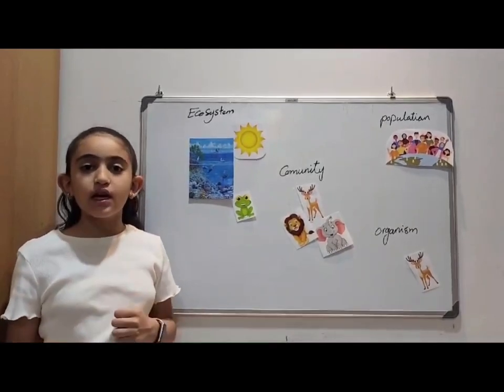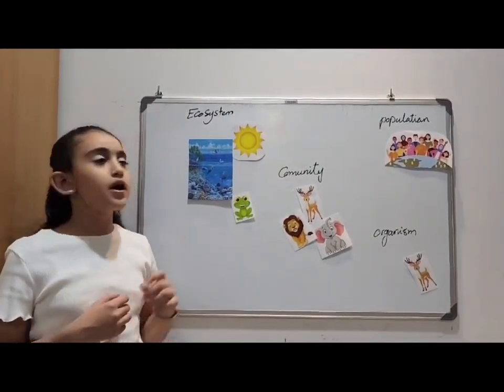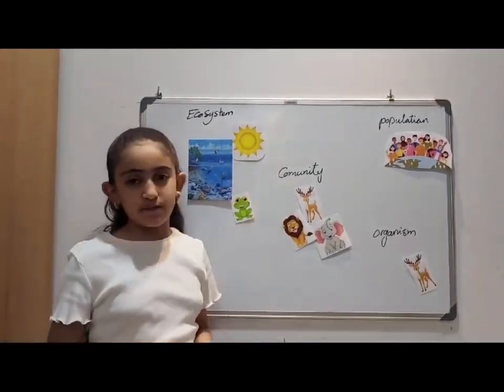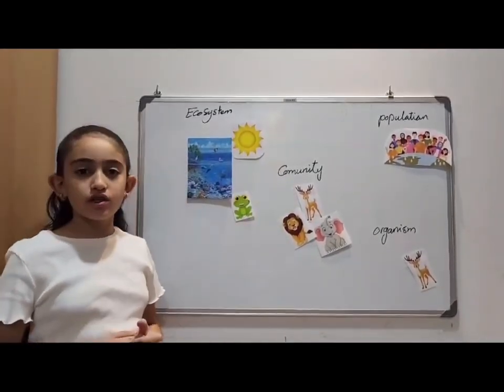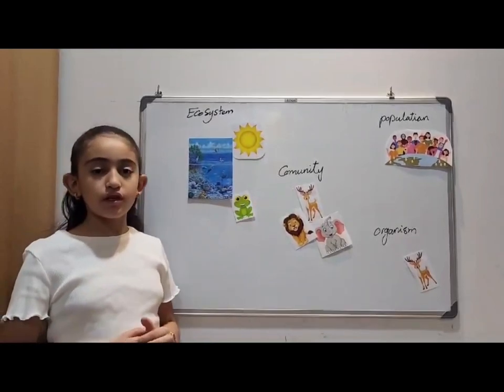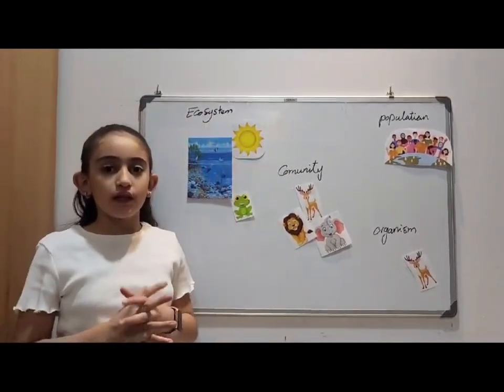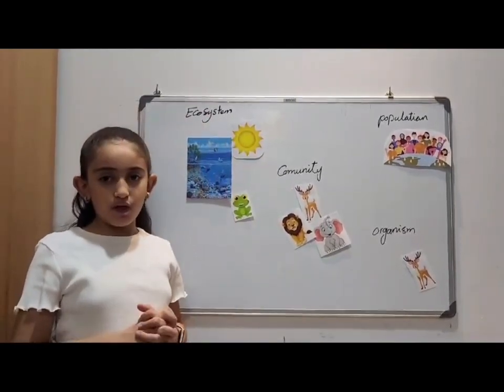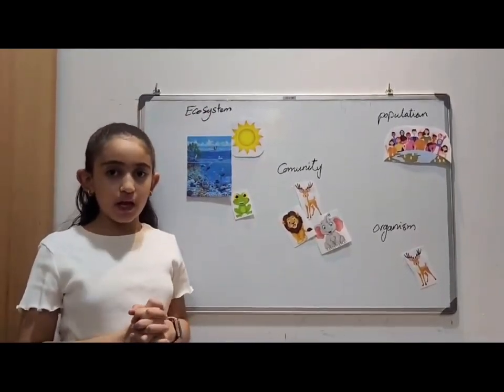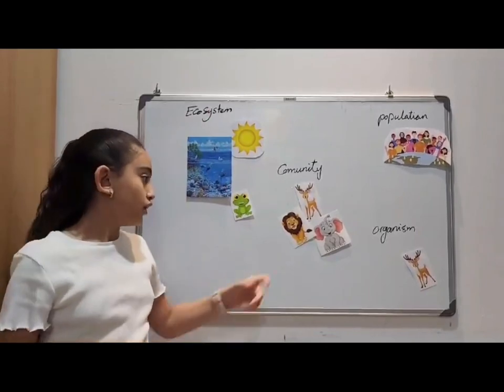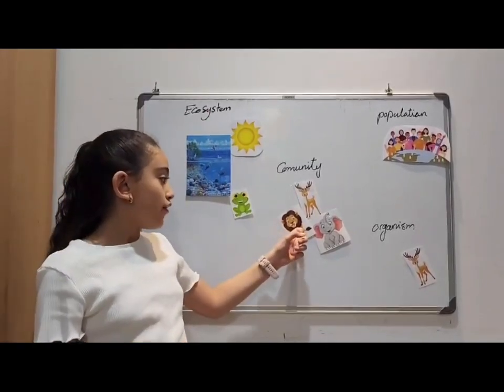All of these make up an ecosystem. Next is community. A community is all living things that live together in the same place.